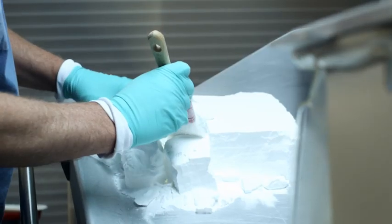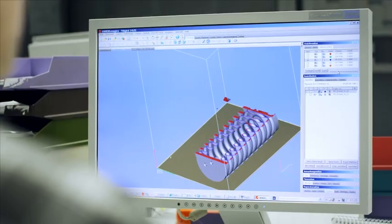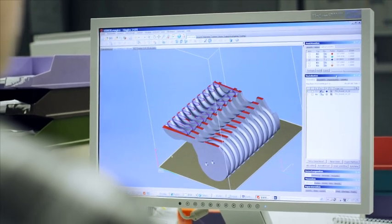In laser sintering, a powerful laser fuses powdered material a layer at a time to produce the desired shape.